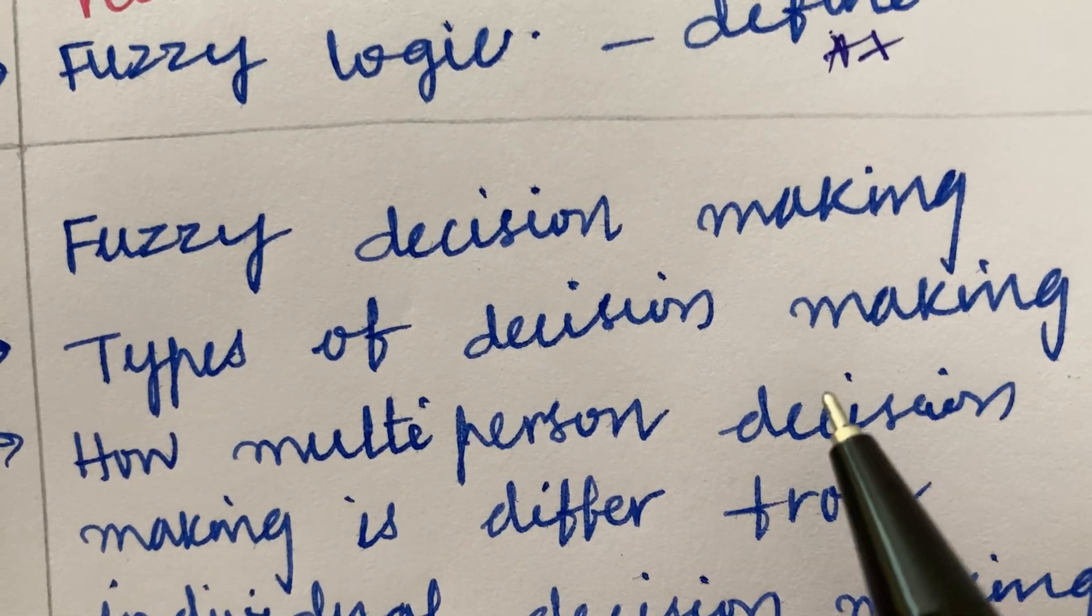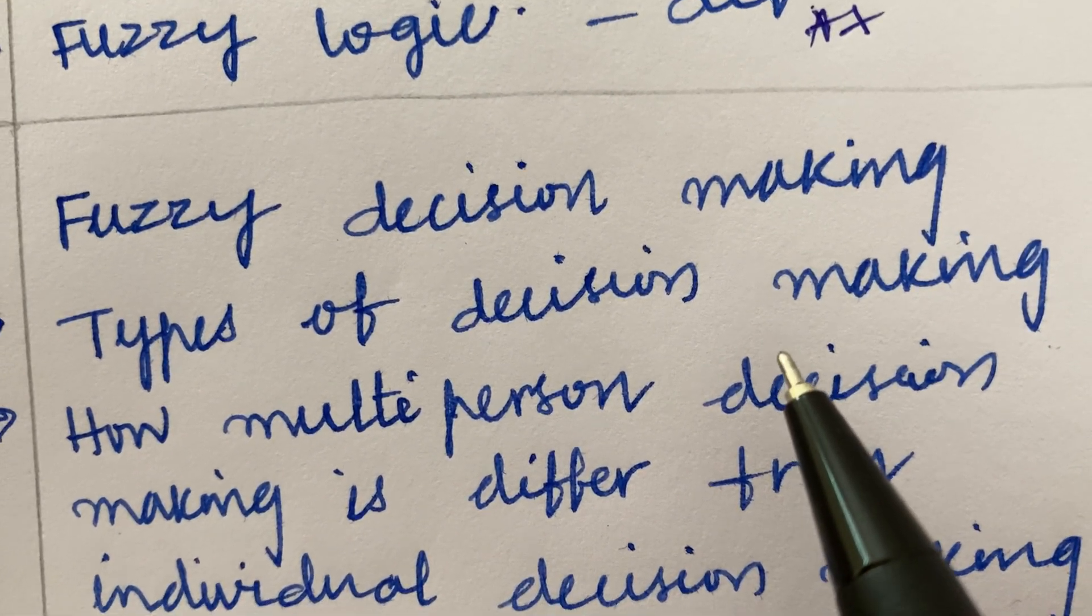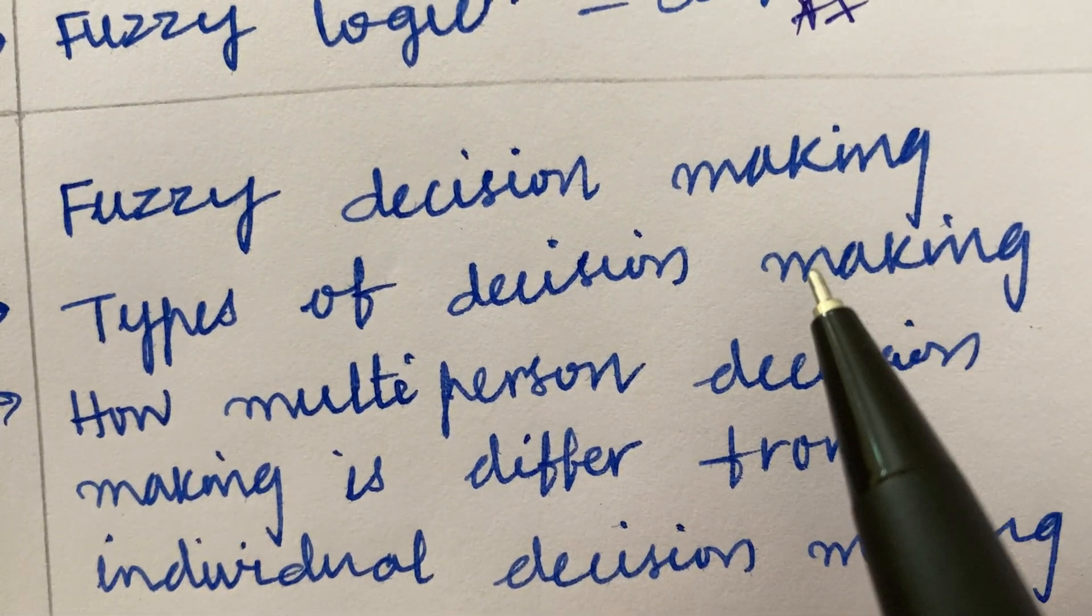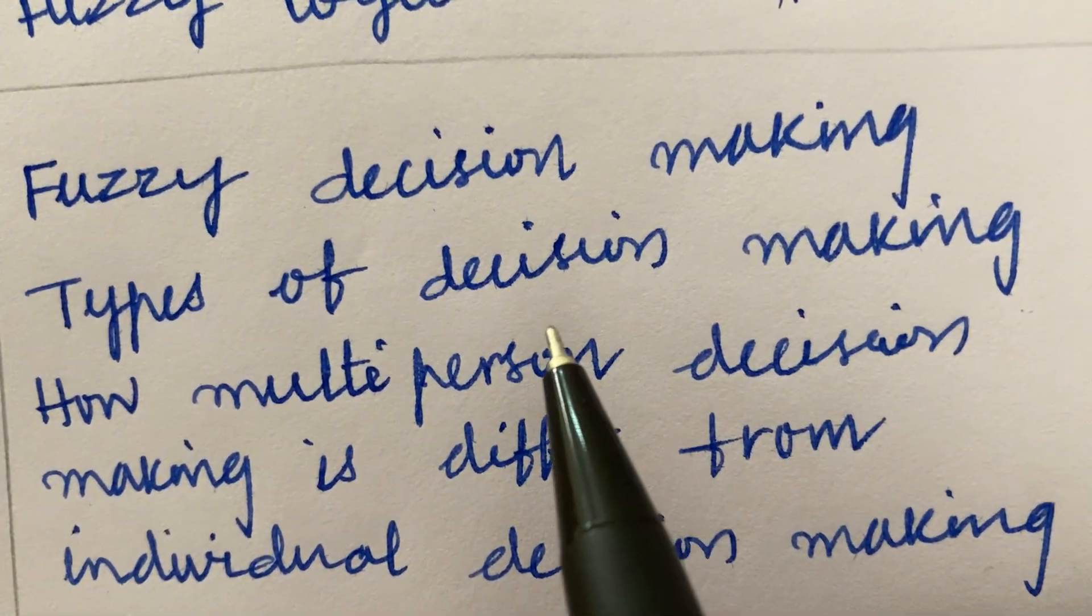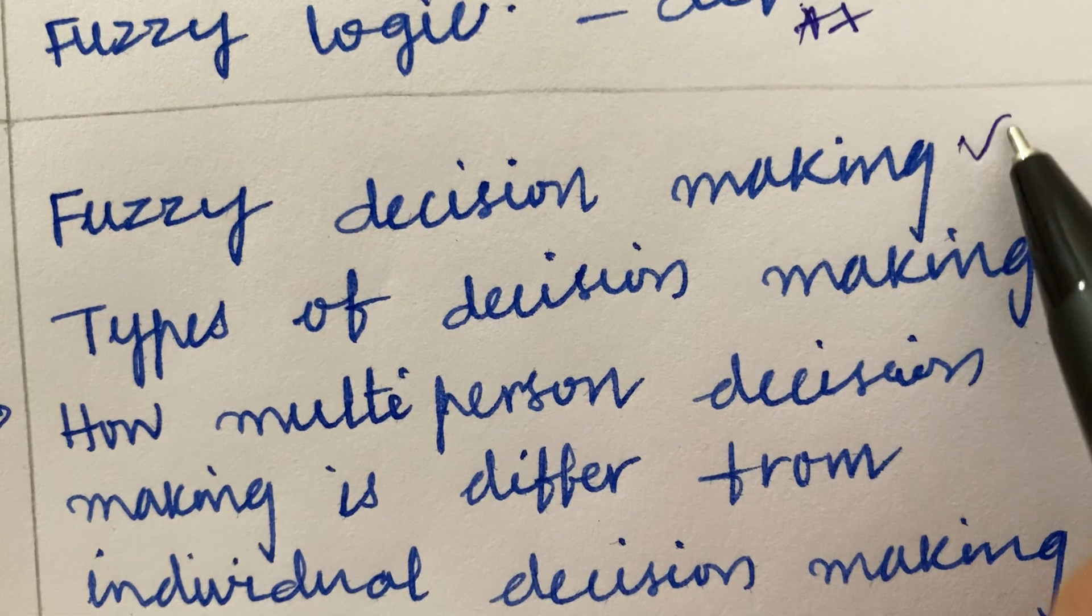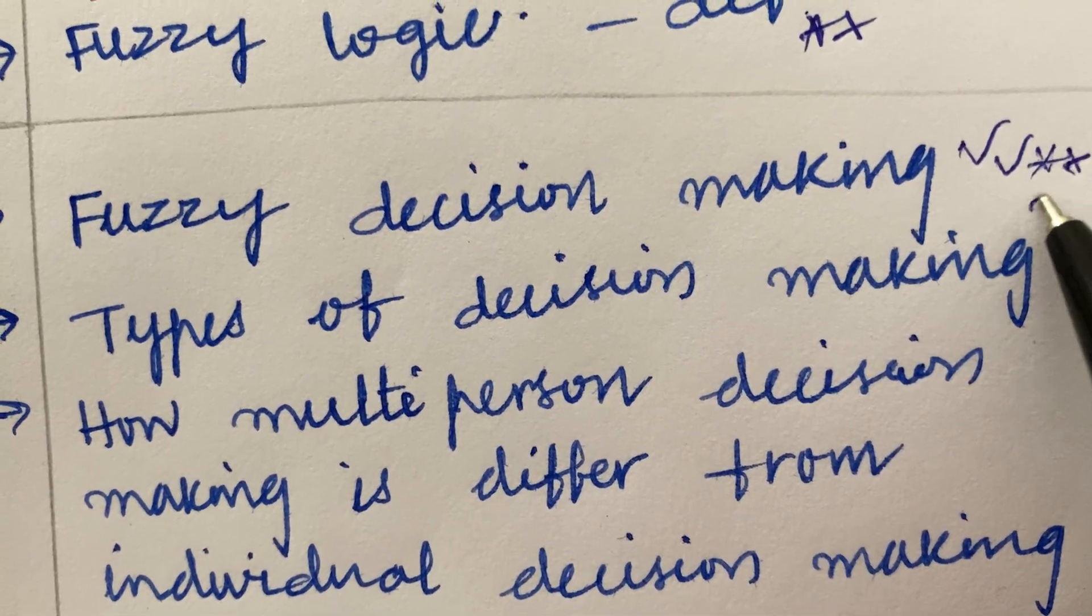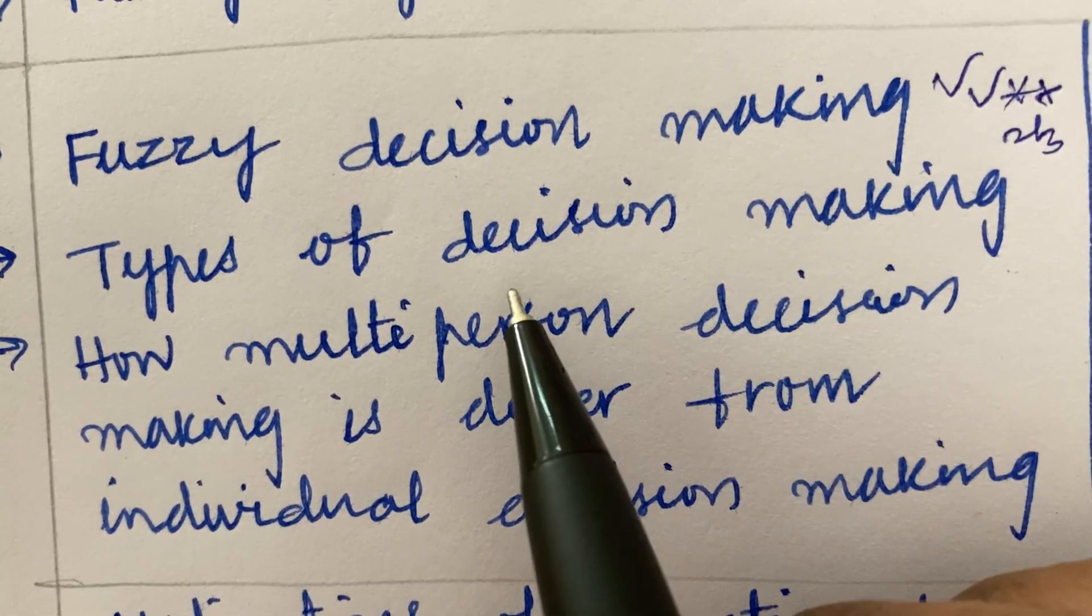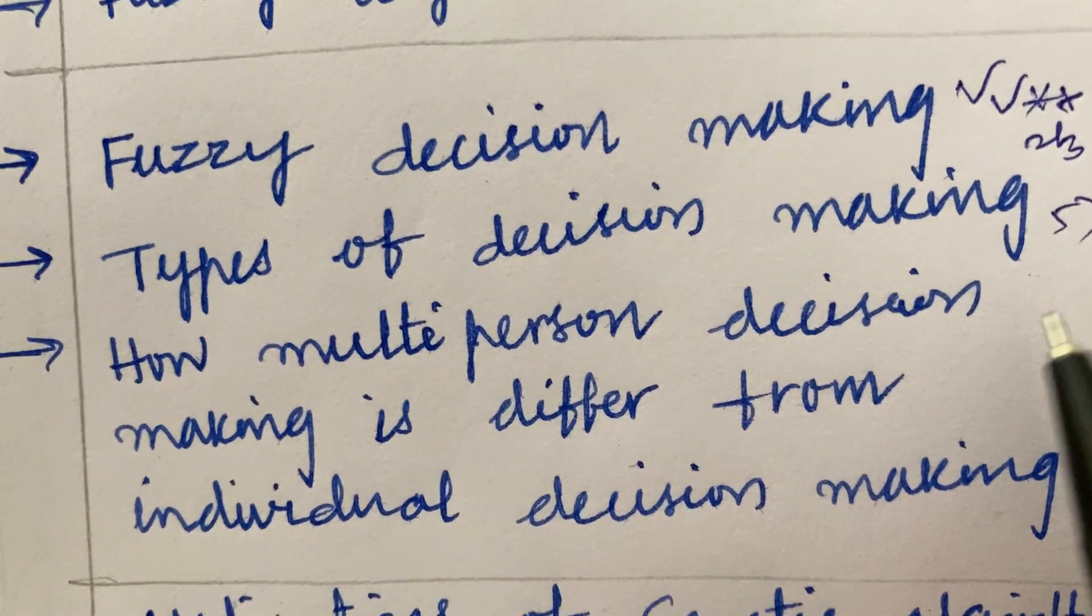Most of the questions were covered from that. I hope even from this course you are going to get 100% questions from the video which I am going to work out for you. The fuzzy decision making is said to be a gunshot question. Define the term may be 2 mark, 3 mark and the types of decision making may be a 5 mark question.